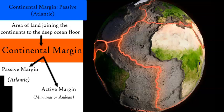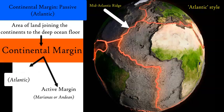This video is going to focus on the passive continental margin, which is different to the active. The passive is classically known as the Atlantic type, because a lot of the passive margins between the ocean and the continents are located around the Atlantic Ocean — both on the North American side, the European side, African, and South American.